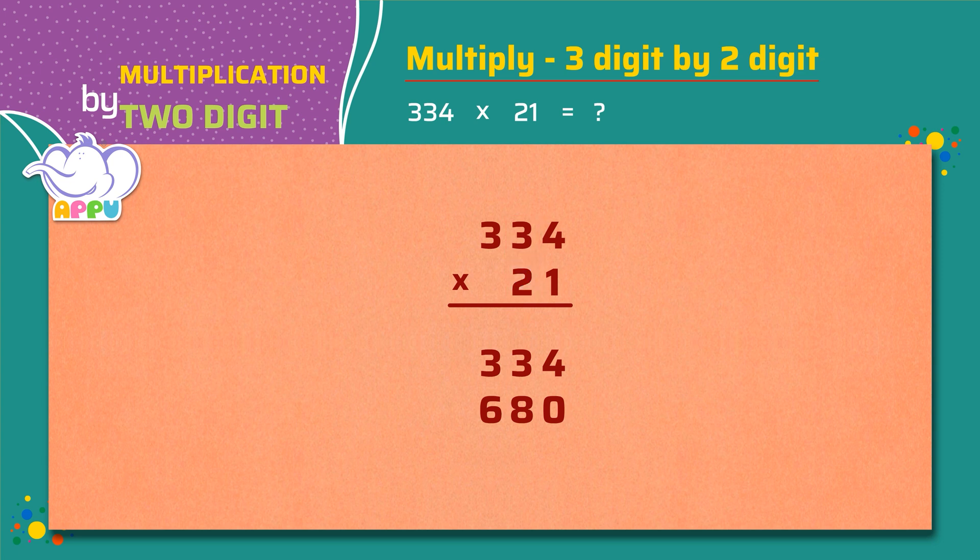Next, we multiply the number in the hundreds place by 2, which is 3 times 2 equals 6. We write this in thousands place.